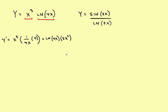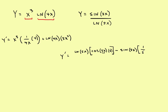For the quotient rule, y prime equals the original denominator times the derivative of the numerator. Using the new rule, the derivative of the natural log portion is 1 over the argument times the derivative of the argument, minus the numerator times the derivative of the denominator, all divided by the denominator squared. That's an example of both the product rule and the quotient rule applied to natural log.